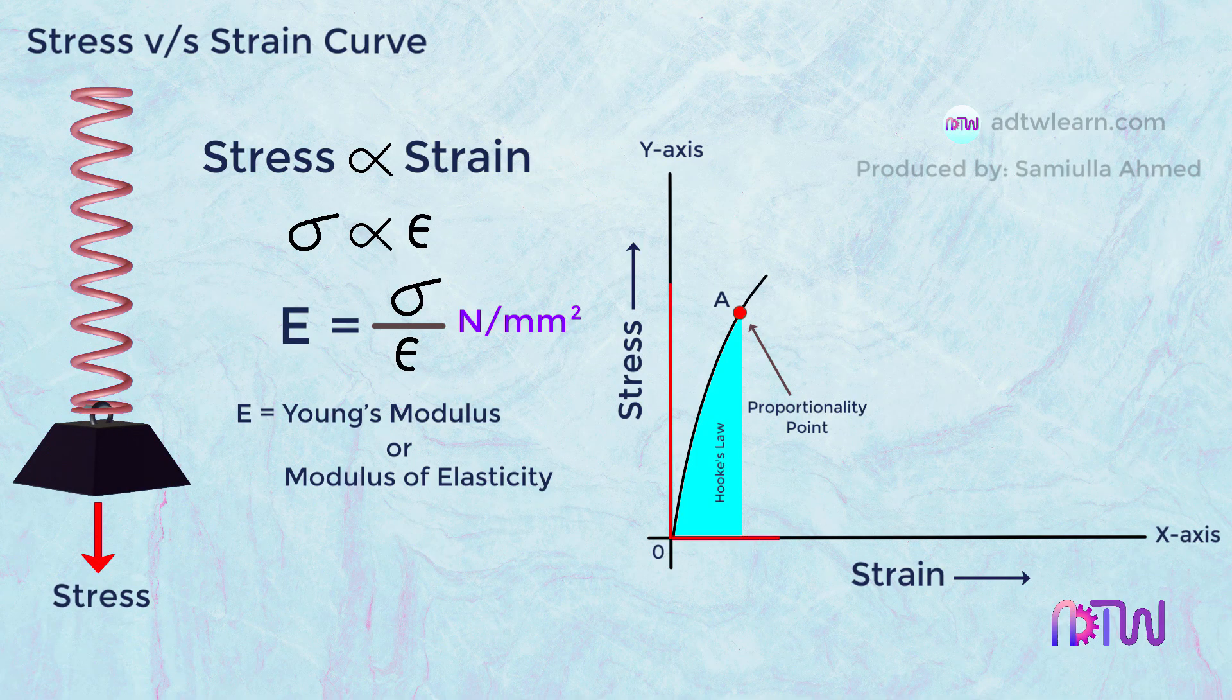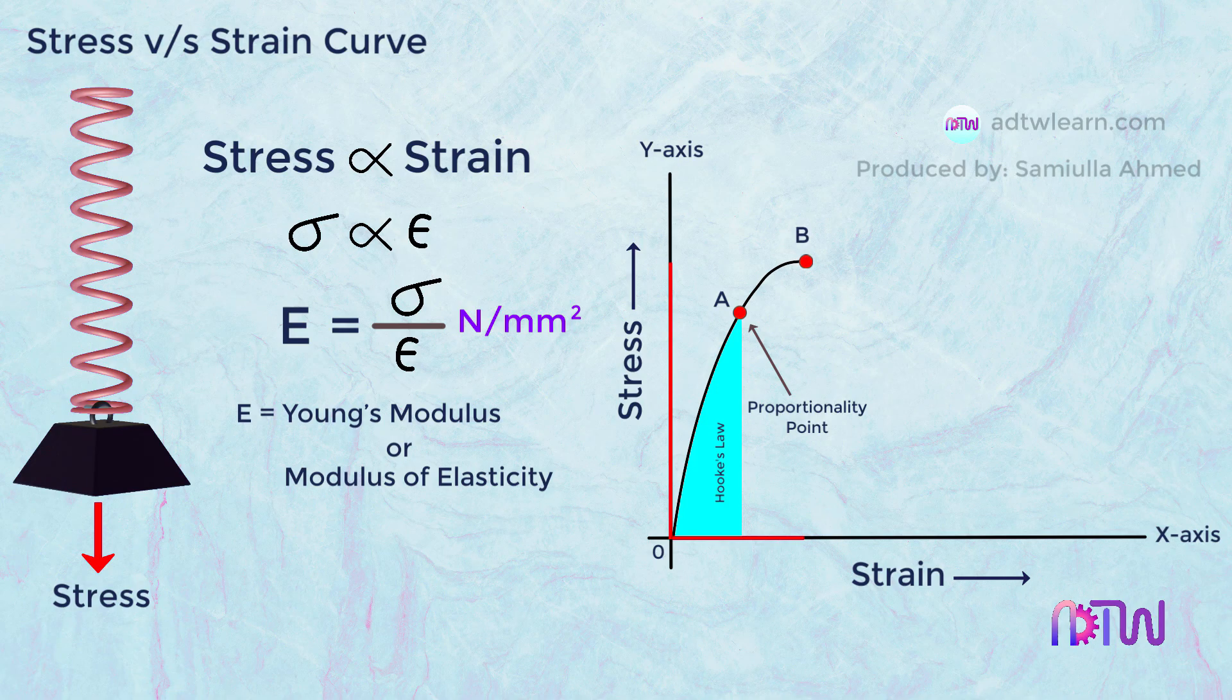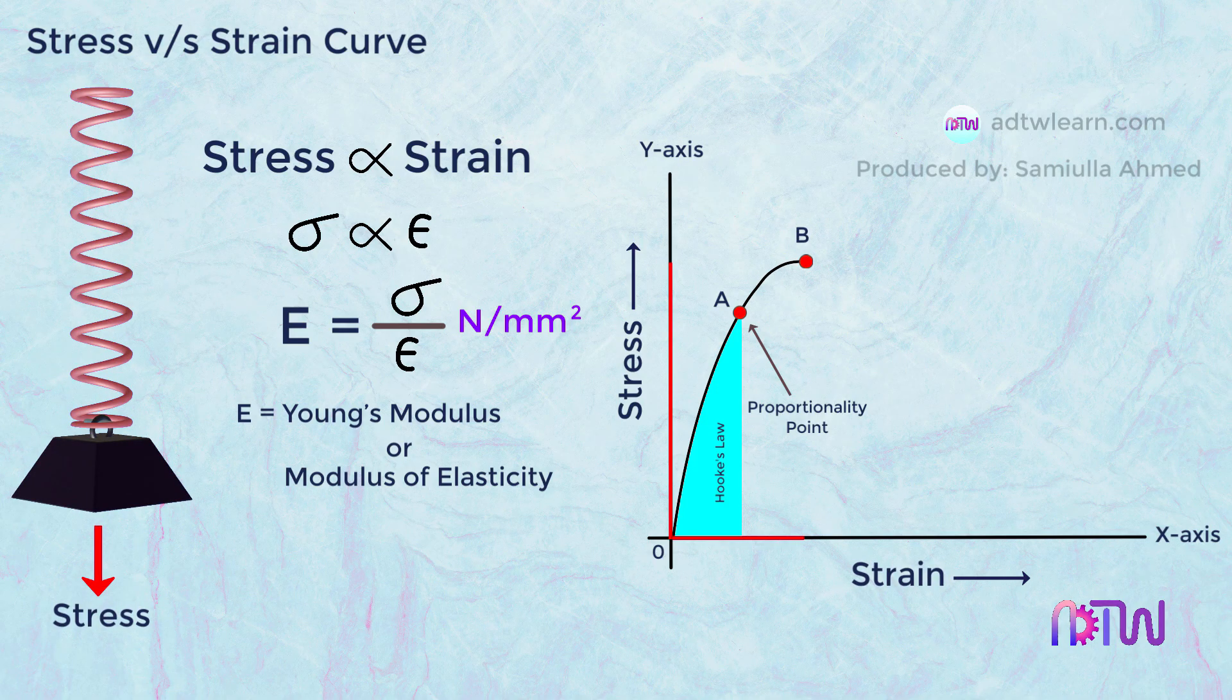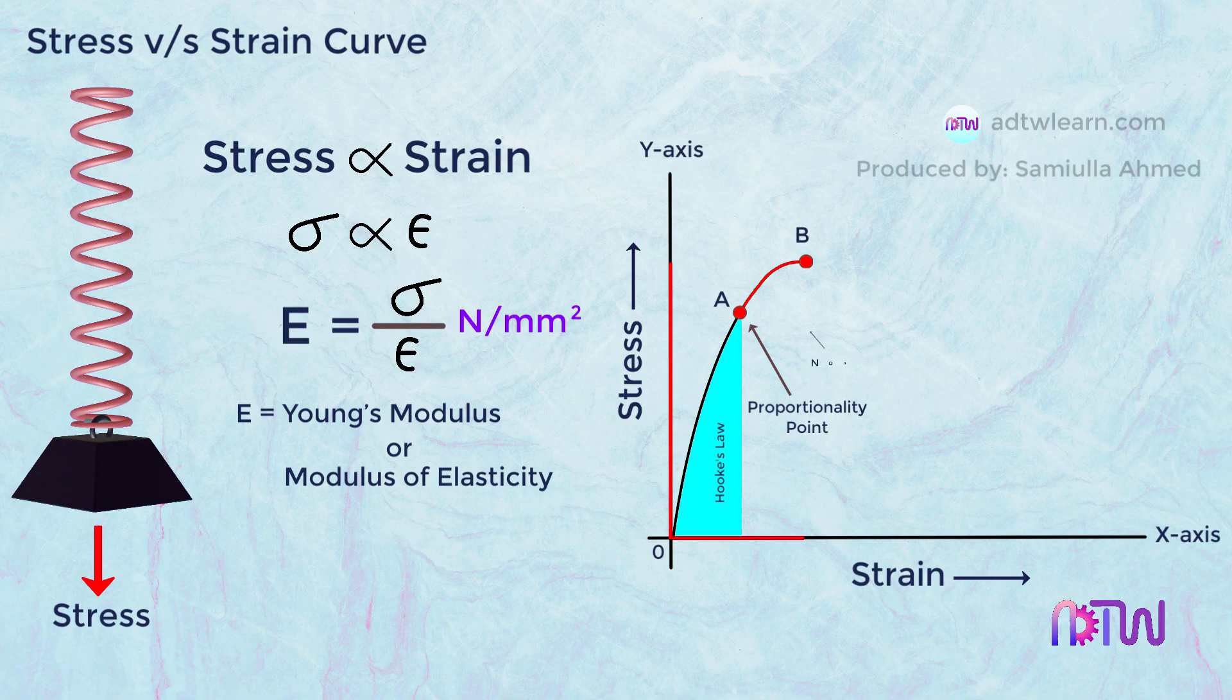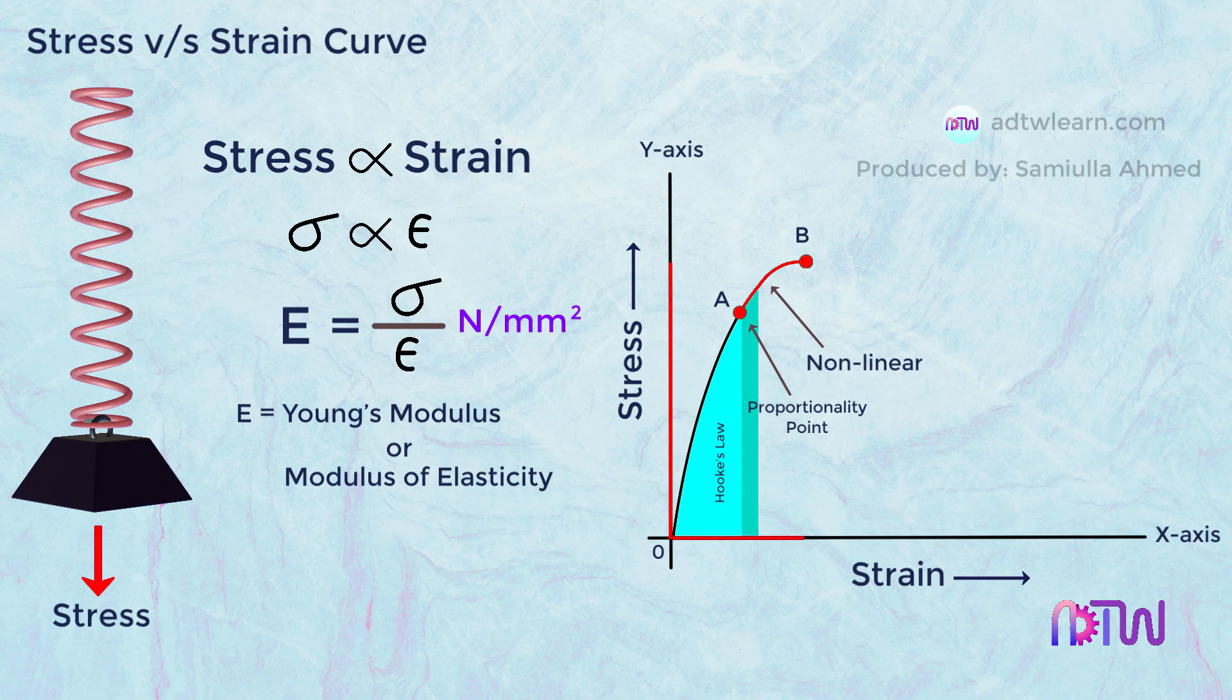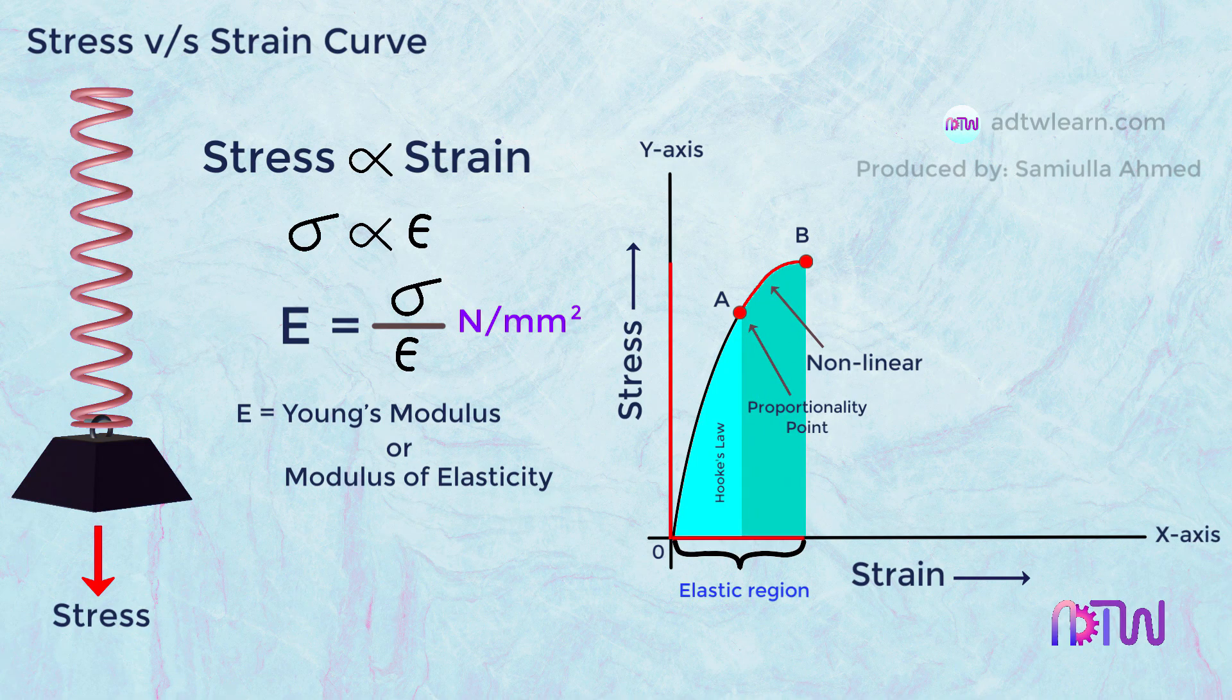Next, if we further increase the stress acting on the body, the strain also increases but not proportionally. Here, the relationship between stress and strain at the curve A to B is nonlinear. The region between A to B is also called the elastic region.